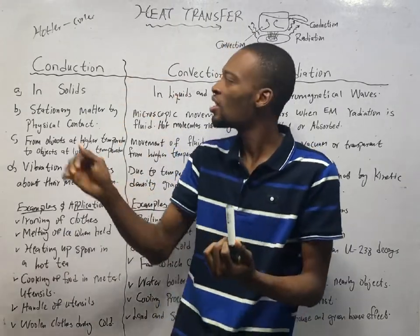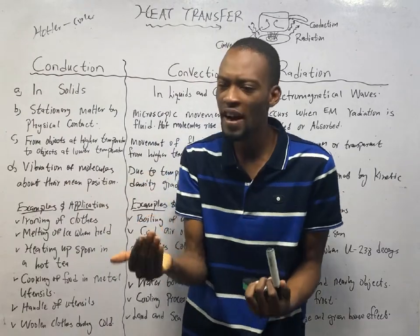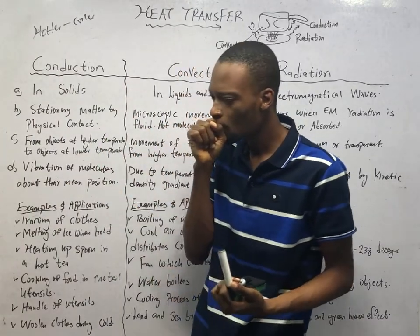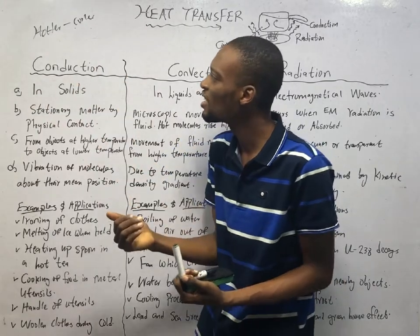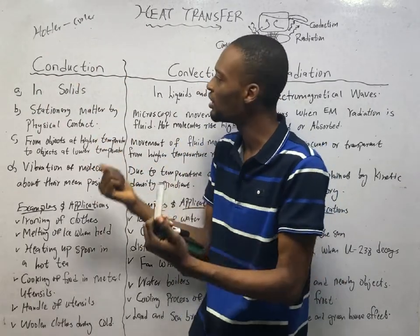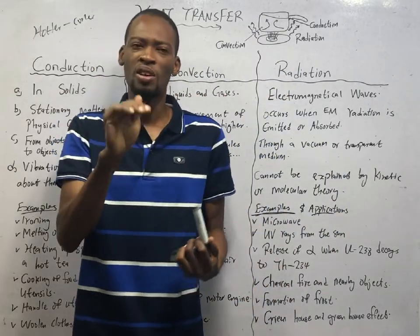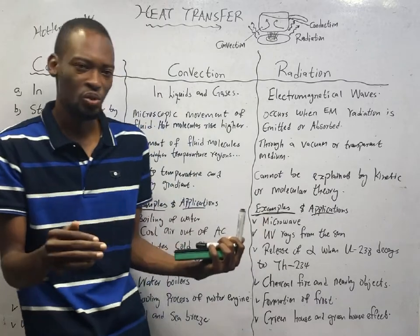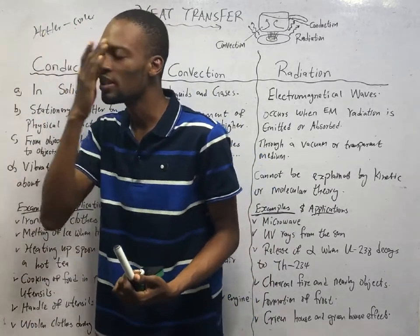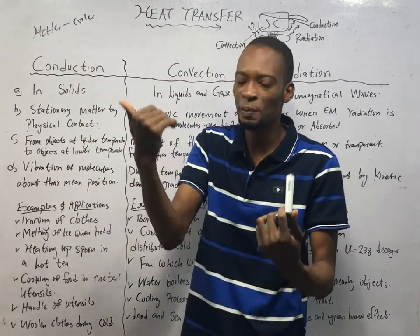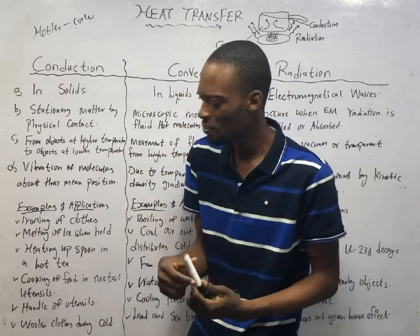Naturally, heat will flow from a hotter body to a cooler body, or from a hotter environment to a cooler environment. If you try to do it the other way around — to transfer heat from a cooler body to a hotter body — it is very, very expensive. That is what an air conditioner tries to do: transfer heat from a cooler body to a hotter body. This is why it is very expensive to run an air conditioner.